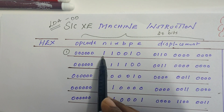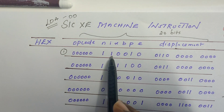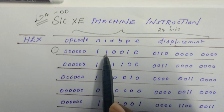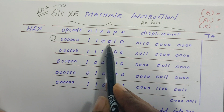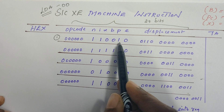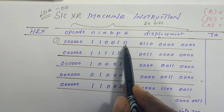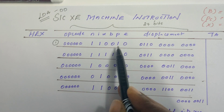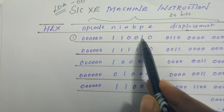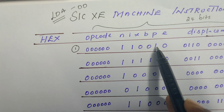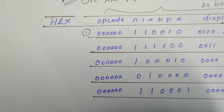In the first example, n=1, i=1 — whenever n and i are both set to 1, it refers to SIC XE architecture. x=0, b=0, p=1, e=0. When e=0 it refers to a format 3 instruction. Looking at the combination of b and p: p=1 indicates PC relative addressing mode.